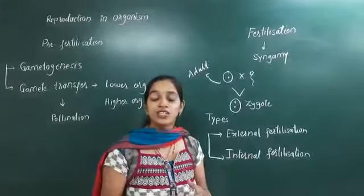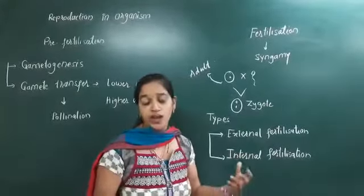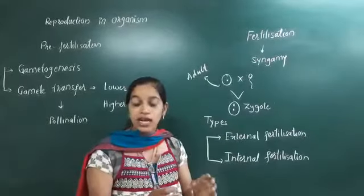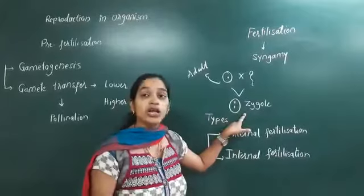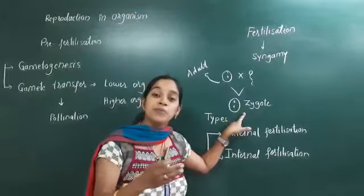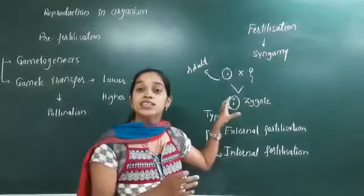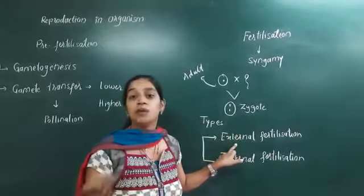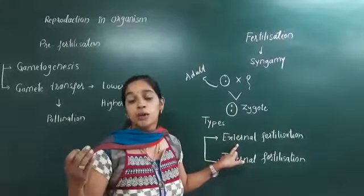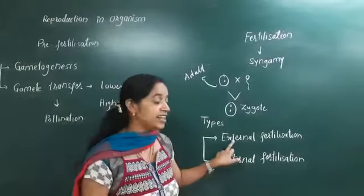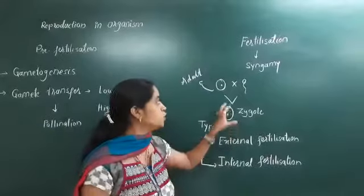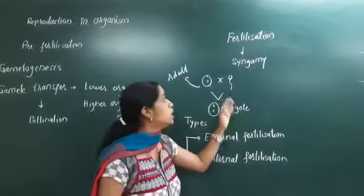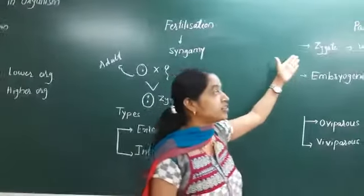In case of internal fertilization, it is more advantageous. Why? Because usually here the male gametes will be transferred to the female body and the development of zygote, instead of outside, will be happening inside the female body. Here the zygote will be well protected, but in external fertilization the zygote will be exposed to predators. So this is more advantageous than external fertilization. This is a very important event which leads to the formation of zygote. After fertilization, what other things happen? We call them post fertilization.